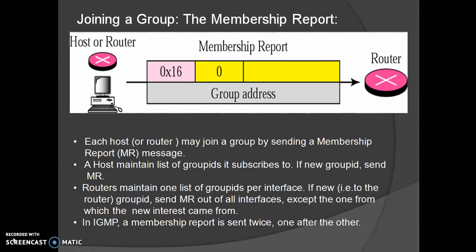A host or router can join a group. A host maintains a list of processes that have membership in a group. When a process wants to join a group, it sends its request to the host. The host adds the process name and the requested group name to its list. If this is the first entry for that particular group, the host sends a membership report message. If it is not the first entry, there is no need to send a membership report since the host is already a member. The protocol requires that the membership report be sent twice in succession, so that if the first is lost or damaged, the second replaces it.